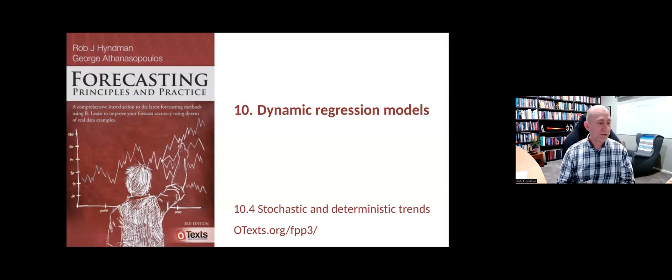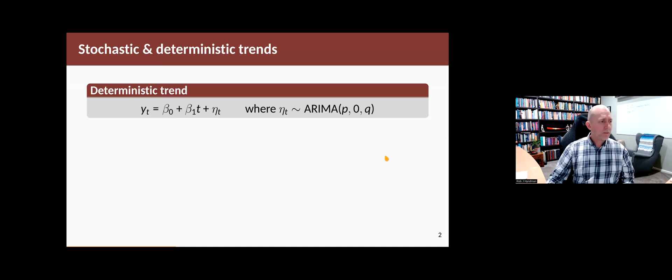Sometimes in time series modeling a distinction is made between stochastic trends and deterministic trends. So let's look at what the differences are. A deterministic trend is simply a linear function of time where the error is a stationary process.